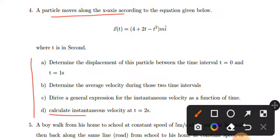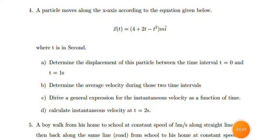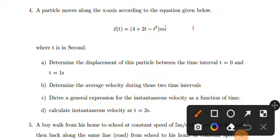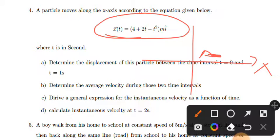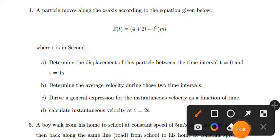A particle moves along the x-axis according to the position equation given below. Determine the displacement of this particle between the time interval t = 0 and t = 1 second. We'll use the position equation and substitute values to find the displacement.